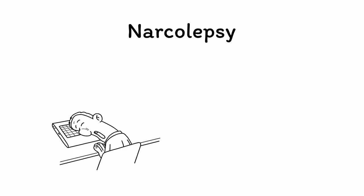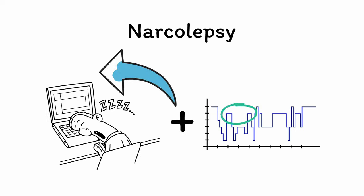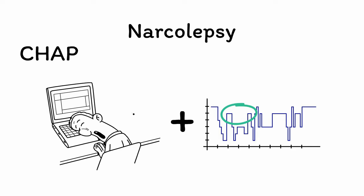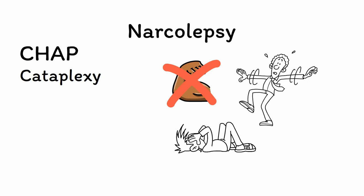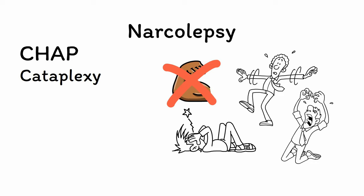Finally, narcolepsy is a neurological disorder characterized by both excessive daytime sleepiness and abnormalities of REM sleep that result in a set of highly characteristic signs and symptoms. The mnemonic CHAP will help you remember these. First, C is for cataplexy — sudden episodes of muscle paralysis during wakefulness, ranging from subtle limb weakness all the way to collapsing due to a complete loss of muscle tone. Cataplexy is often triggered by strong emotional states but can occur out of the blue as well. It is caused by sudden daytime activation of the same muscle paralysis seen in REM sleep.